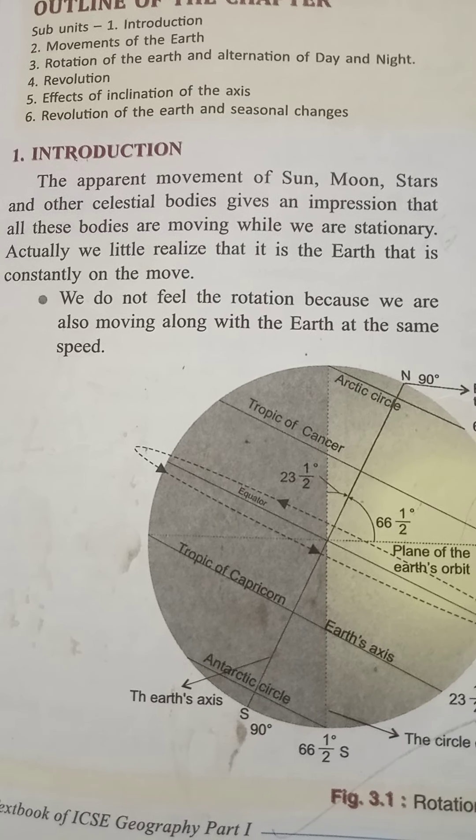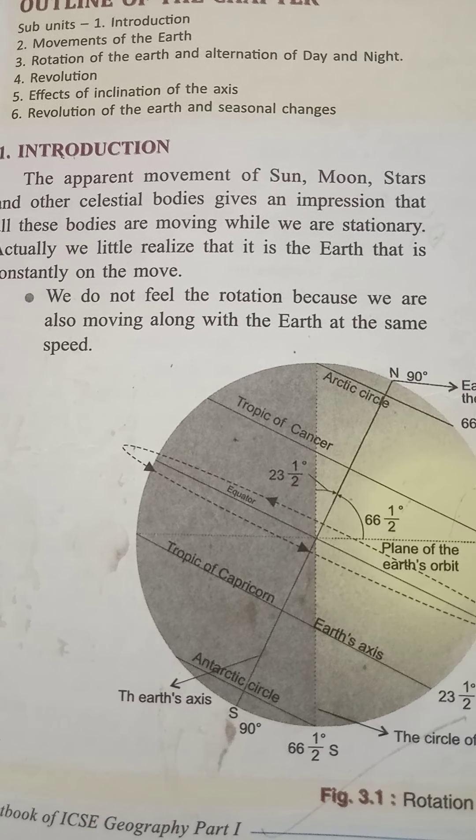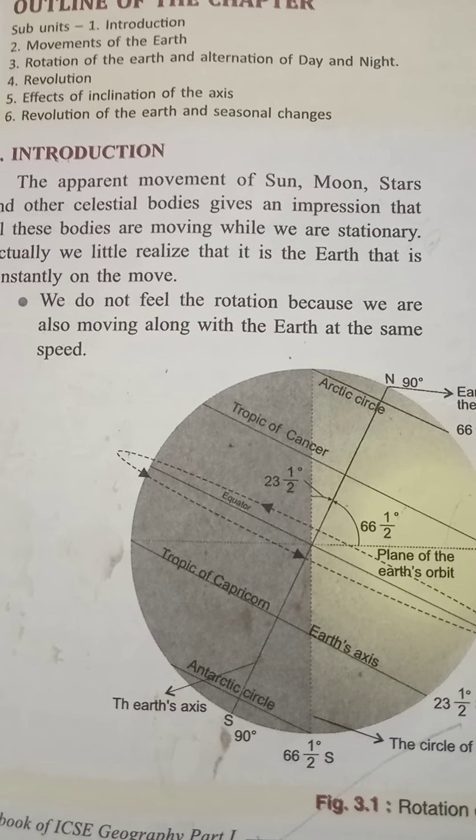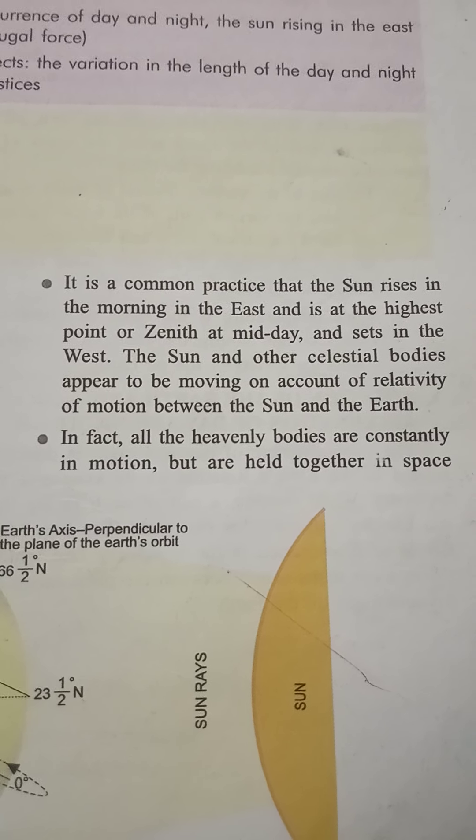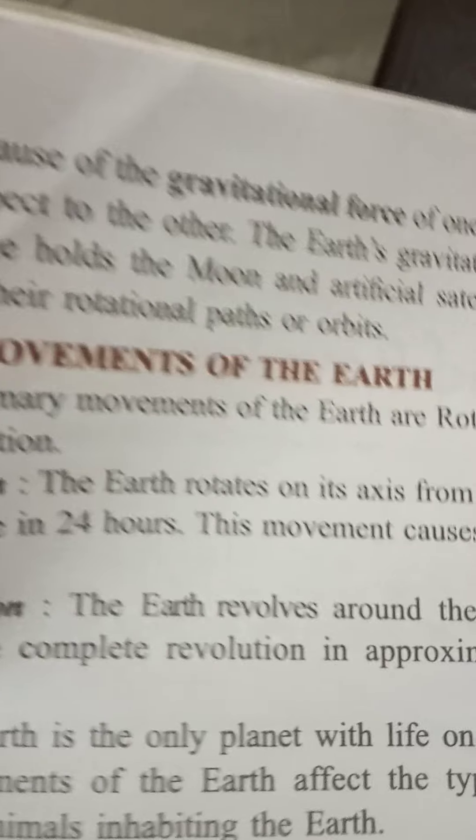Actually, it is not the celestial bodies which are moving — it is the earth which is constantly on the move through rotation and revolution. We don't feel the rotation because we are also moving along with the earth at the same speed. We commonly say the sun rises in the east and sets in the west; this appears so because of the relativity of motion between the sun and the earth. All these heavenly bodies are held together in space because of gravitational force.